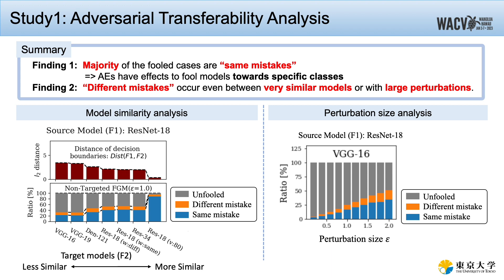The second observation is that, although AEs seem to mostly cause same mistakes, there is a non-trivial proportion of different mistakes. Different mistakes exist even when source and target models are very similar, or even when perturbation size is large.